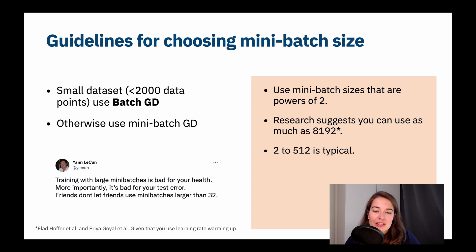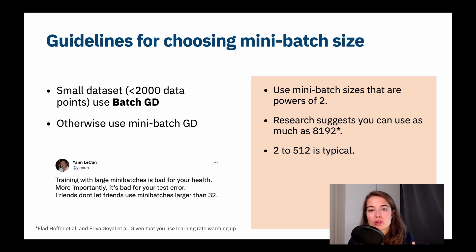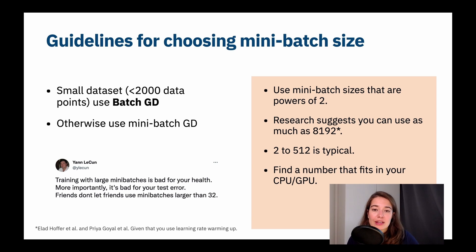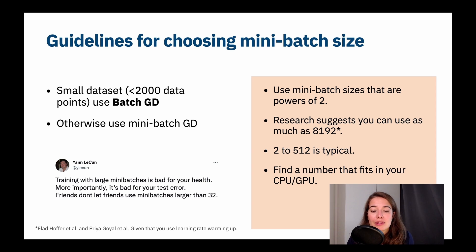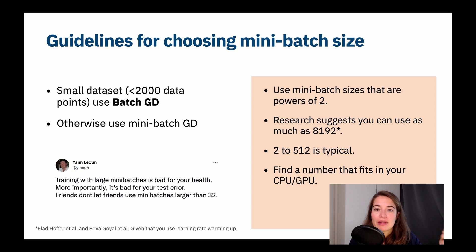Generally, some number between 2 and 512 is typical. What you want is a number that works for your situation, so you'll have to try things. Also important: you want a mini-batch size that fits in your CPU or GPU — if you use a number slightly too high for your processor, you won't use its full power and it'll be a bit slower than it could be.